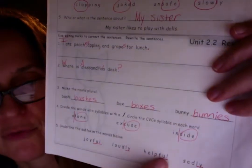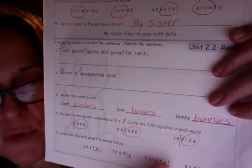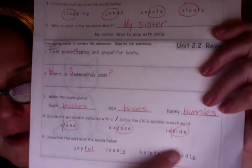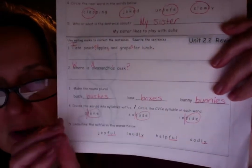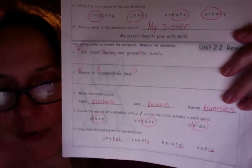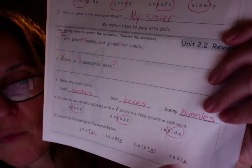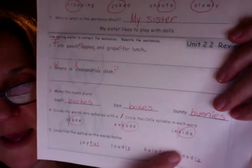Help. Full. Full of help. We should have underlined full because help is your root word. Full changes the meaning from help to full of help. And sadly, sad is our root word. L-Y is our suffix. It means in a way that is sad.